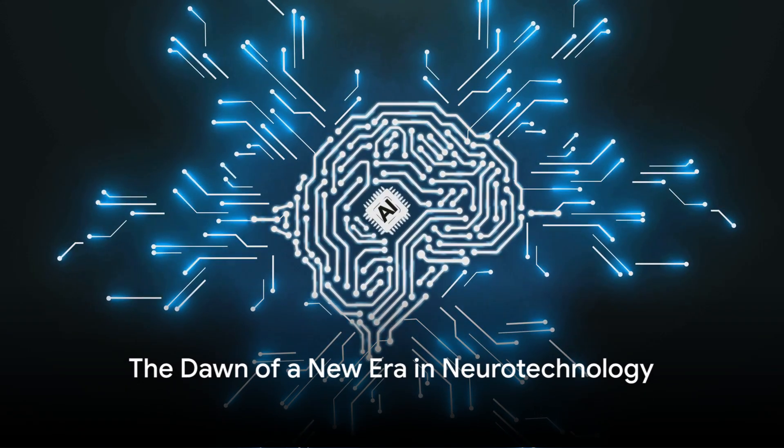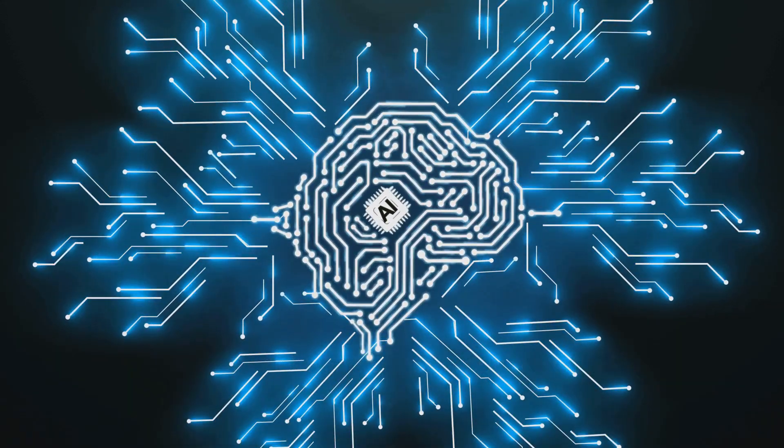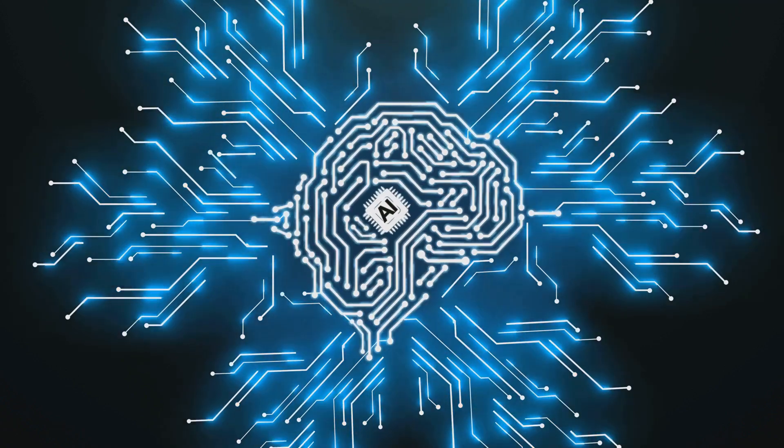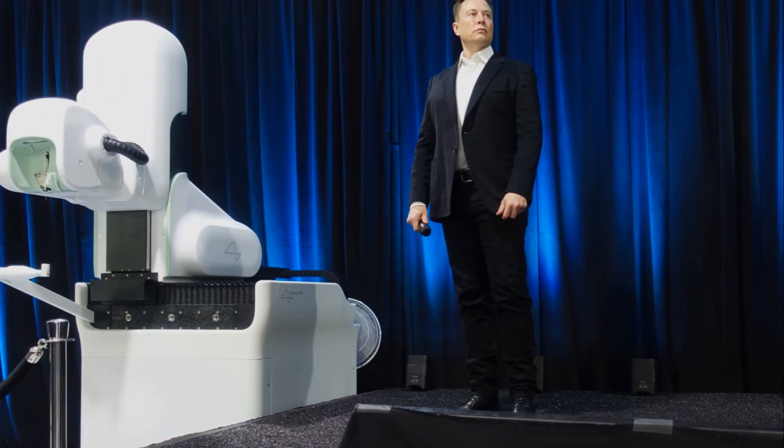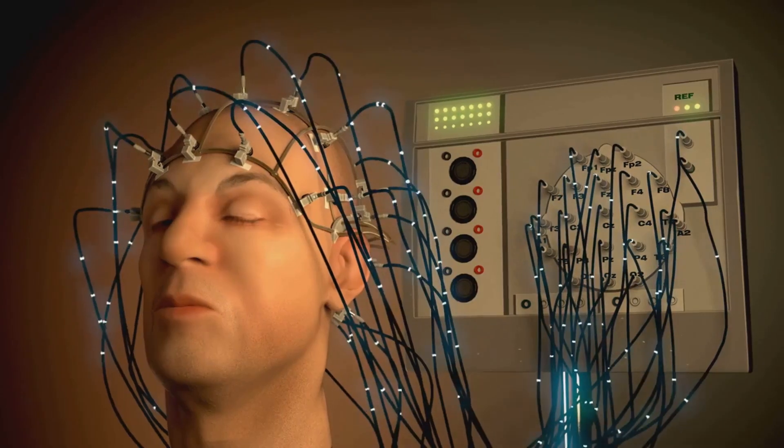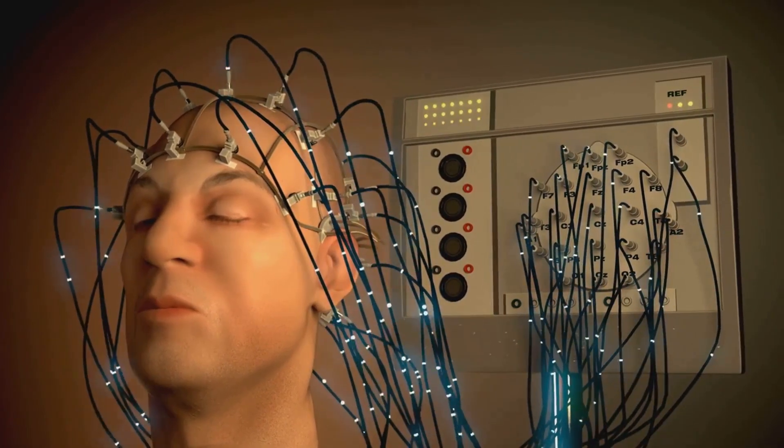In a world where technology relentlessly pushes the boundaries of what's possible, a seismic shift has occurred. Brain chip startup Neuralink, founded by Elon Musk, has successfully implanted its first device in a human subject.